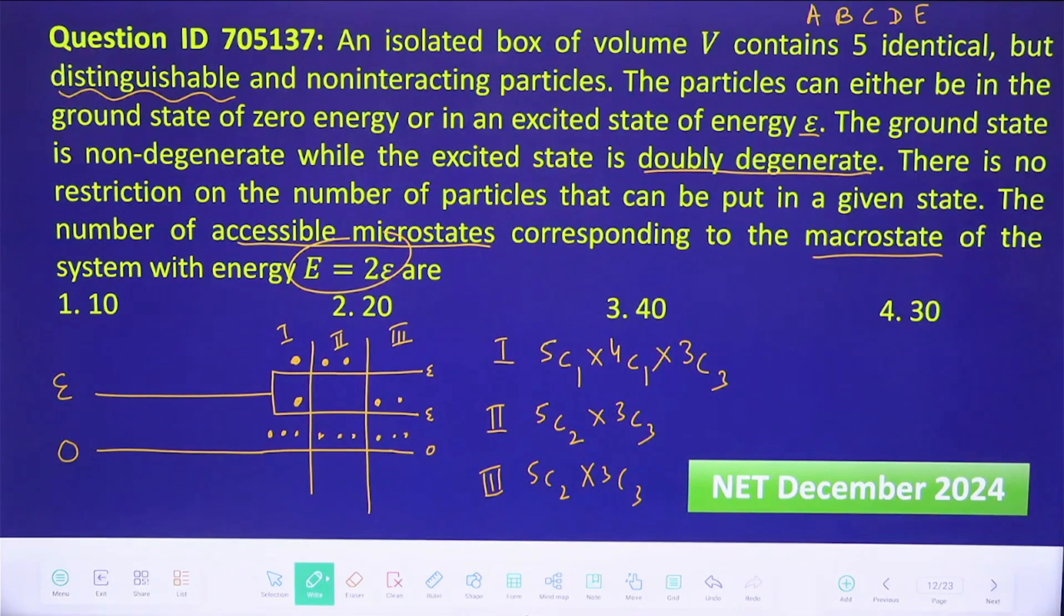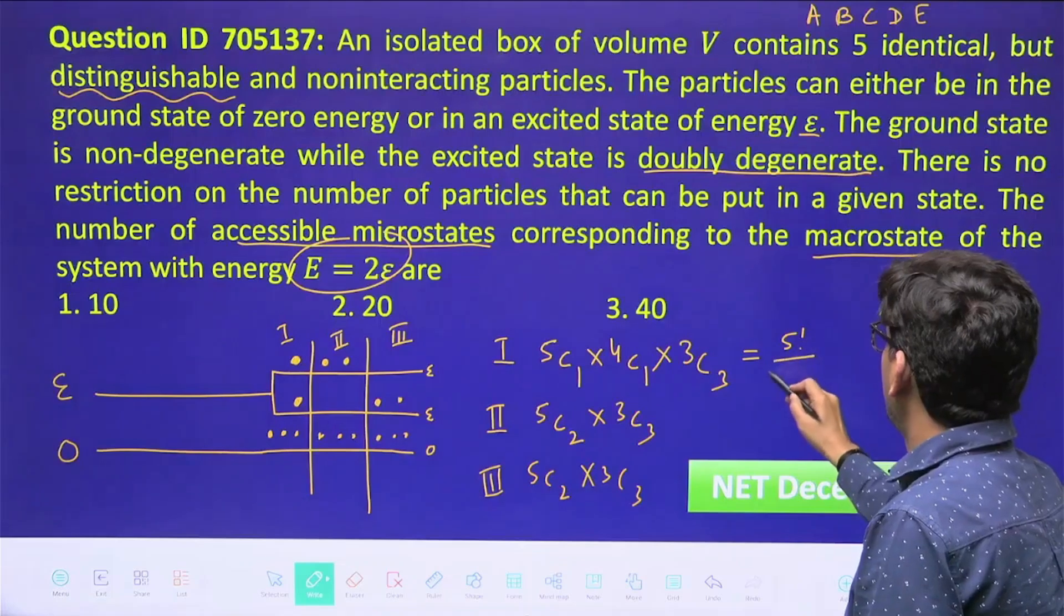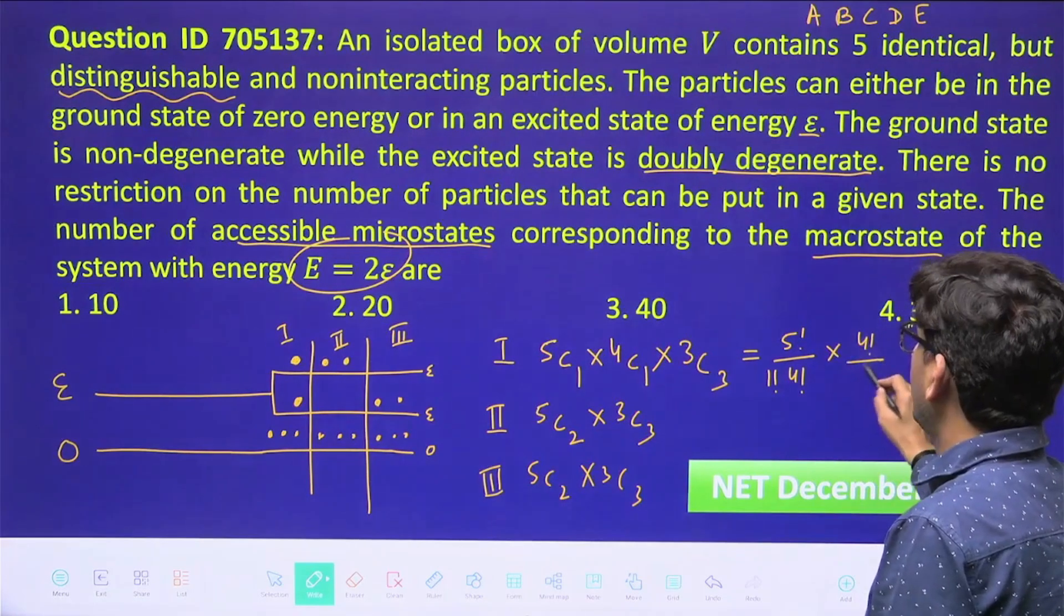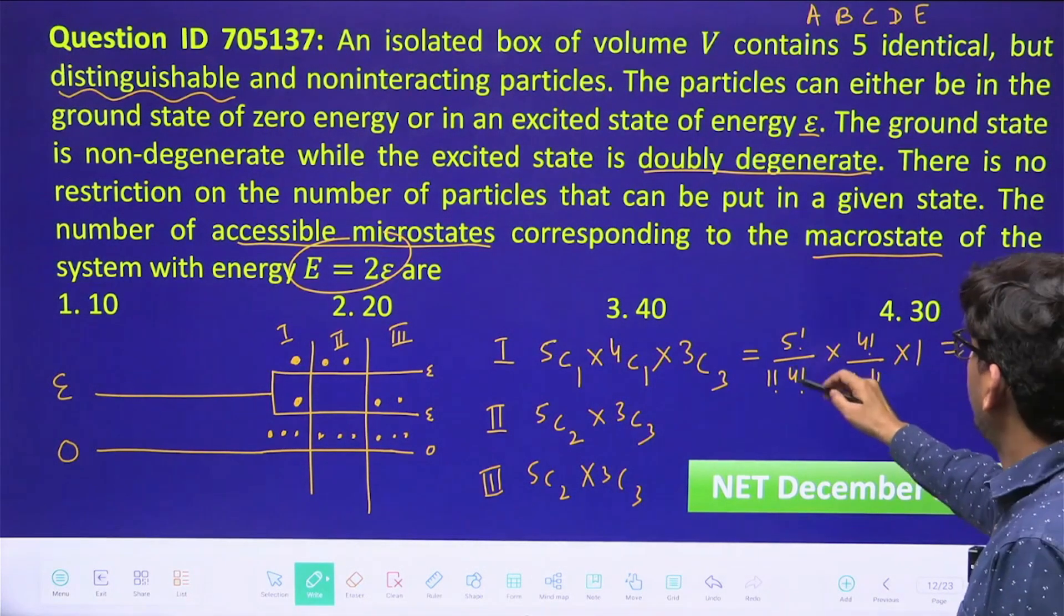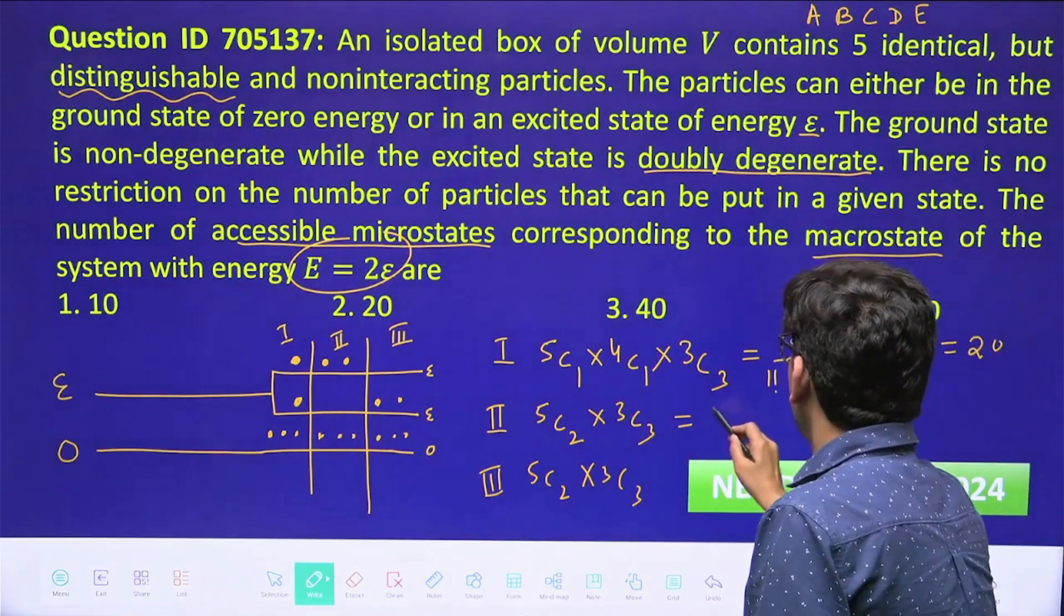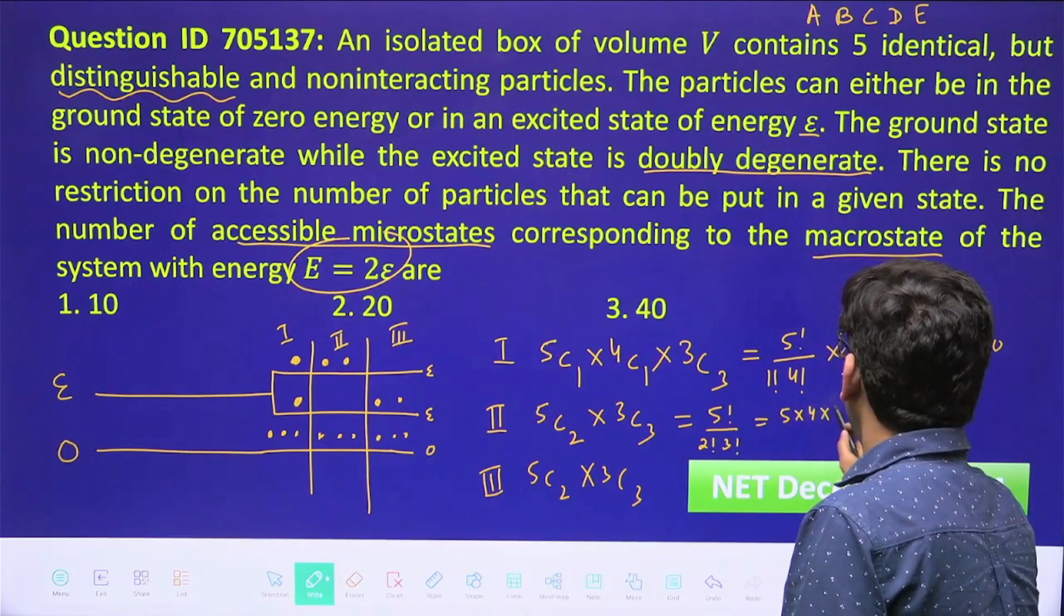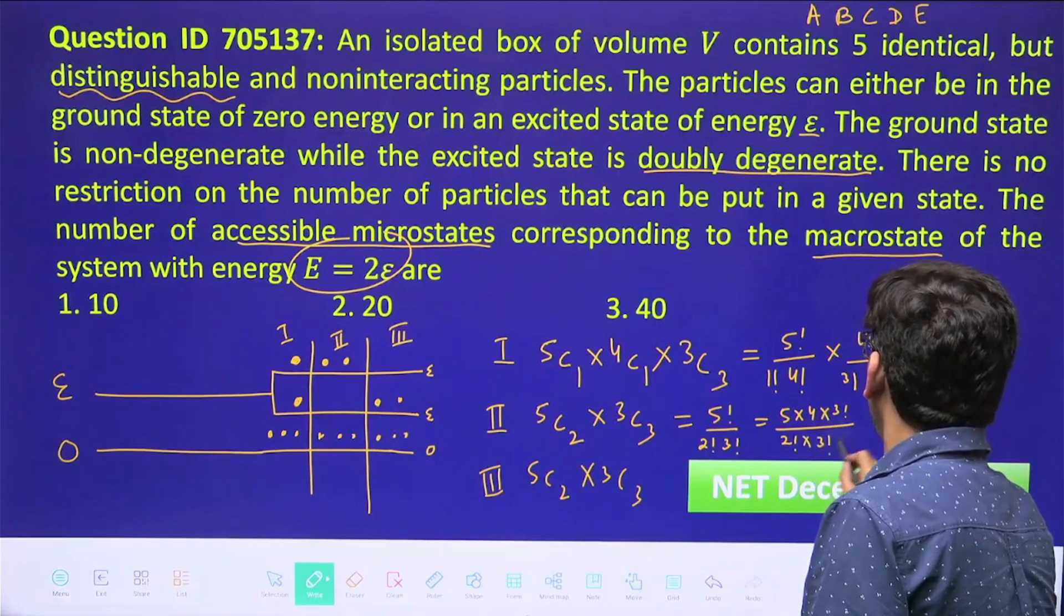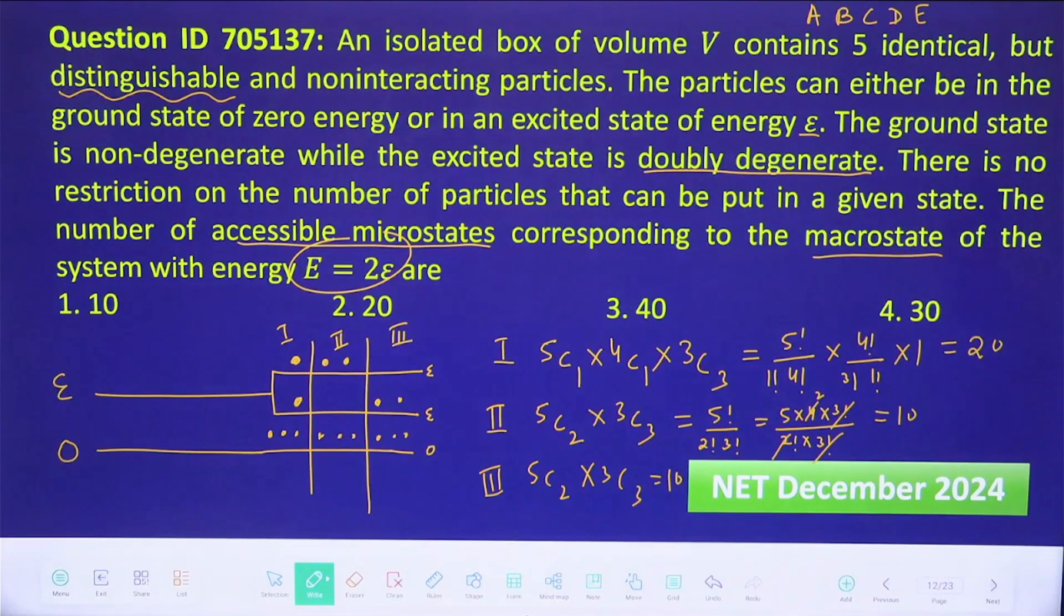3C3 is one, obviously. So now you have to count the total number of particles, and we have to add all these microstates. So this will give me 5 factorial upon 1 factorial into 4 factorial, into 4 factorial into 4 factorial upon 3 factorial into 1 factorial. And this 3C3 is one, so this will become 5 here and 4 here, so it will be 20. And these two will be obviously the same, so it is 5 factorial upon 2 factorial into 3 factorial. This will cancel, this will cancel, and this 2—so this will be 10, and same 10 here. So total number of microstates will be 20 plus 10, 30, and 10, 40. So 40 is the total number of microstates.